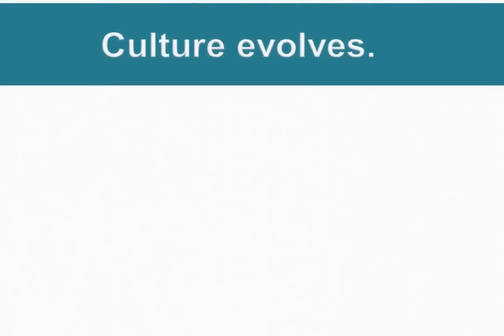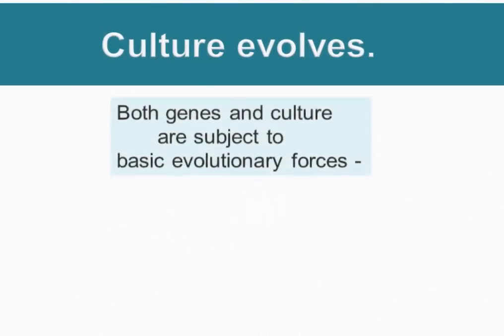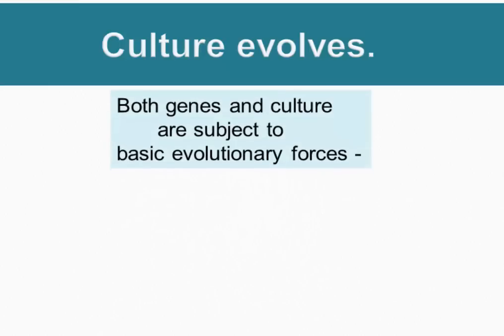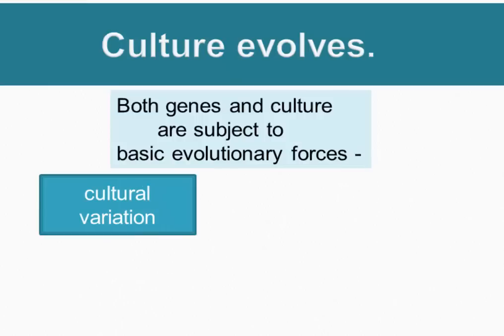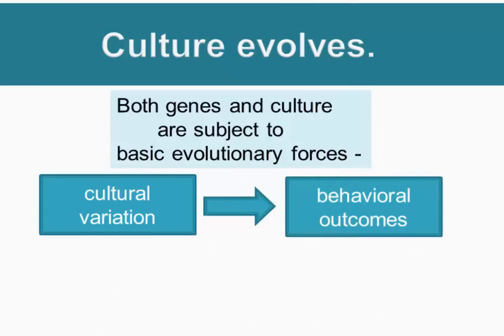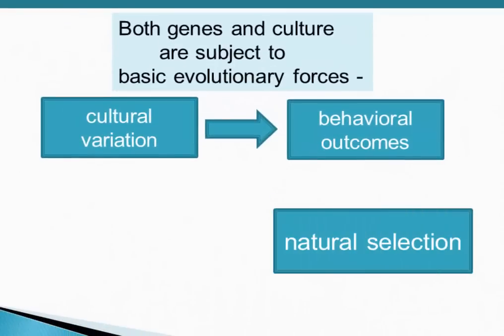Culture evolves — that's the central idea in dual inheritance theory. Both genes and culture are subject to the same basic evolutionary forces. When looking at cultural evolution, we're talking about cultural variation giving rise to behavioral outcomes, which are then acted on by natural selection.